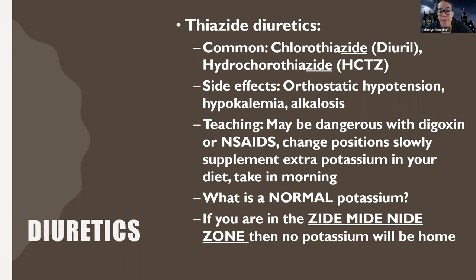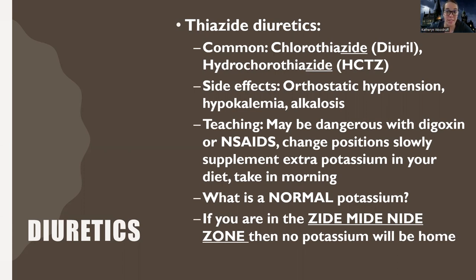All these medications cause orthostatic hypotension, so don't bother putting that on every note card — it's the same for all of them. What's different about thiazide diuretics is that they can lead to acid-base imbalances like alkalosis, and they lower potassium. Normal potassium is 3.5 to 5 milliequivalents per liter — a number you need to know.